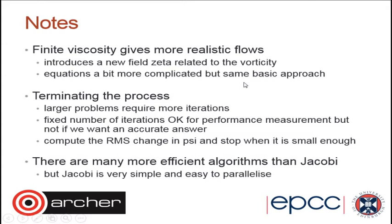The way you run the program is by specifying a number of iterations on the command line — say a thousand or five thousand iterations — rather than a tolerance. If you choose a larger problem, you'll require more iterations. The RMS (root mean square) change in psi is what's used to measure convergence: you calculate the square root of the average of the squared difference between psi at the new and old time steps over all grid points. You can see this function in the code — it's called delta squared.